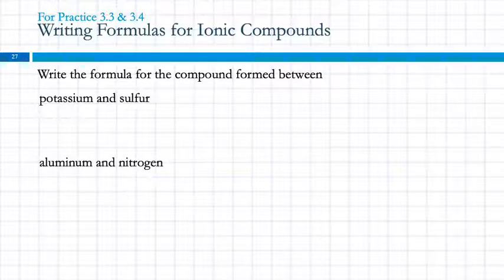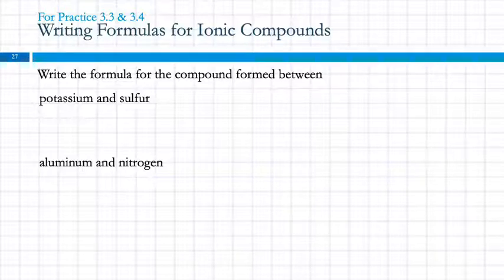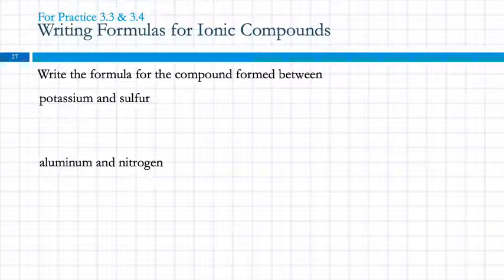NH4 compounds are the only ones starting with a non-metal that you need to identify as ionic. They're not very common, but they do show up in this class. So let's take what we've learned and write a formula for the compound formed between potassium and sulfur.